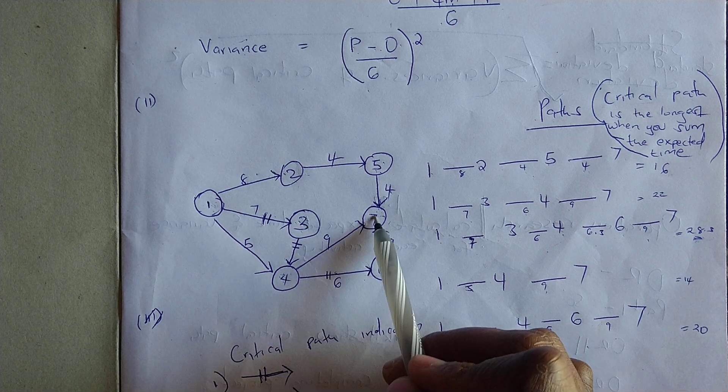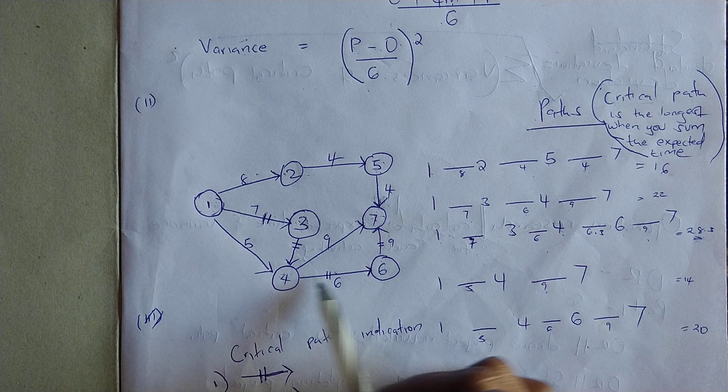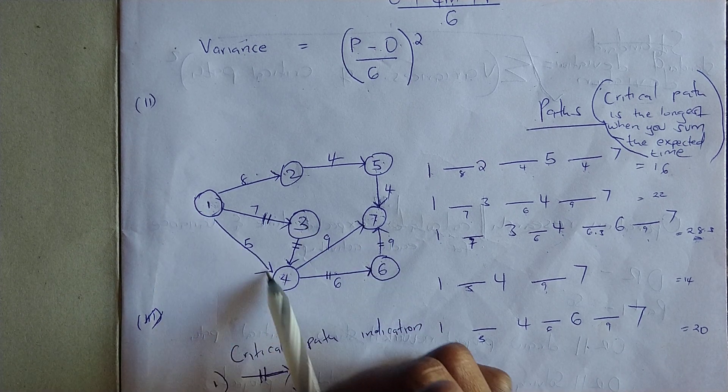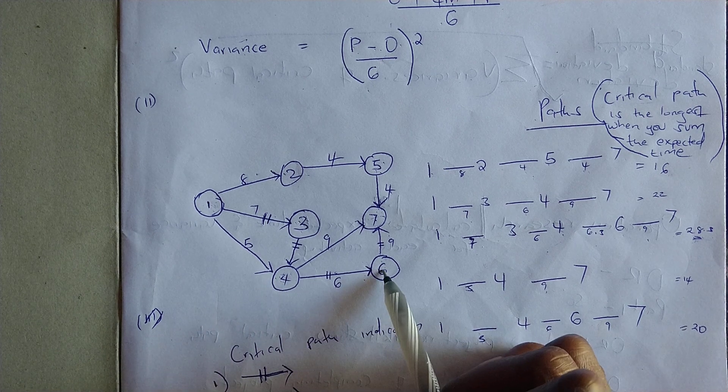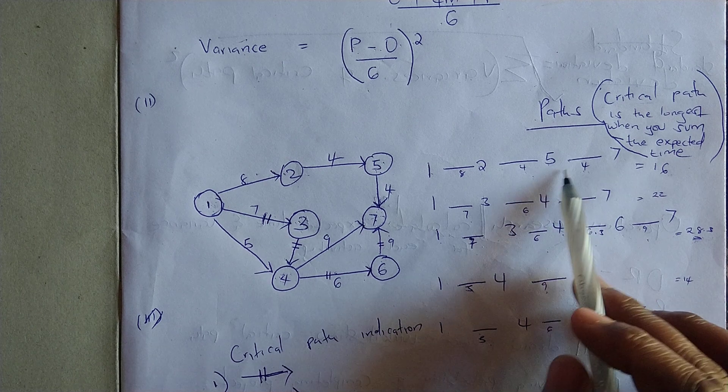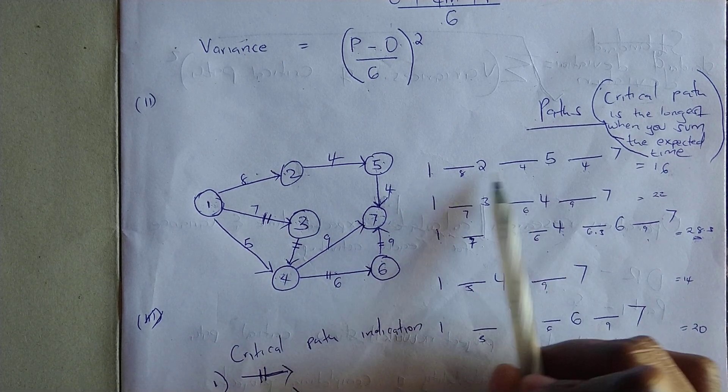Then you have this path: one to three, three to four, four to seven. Then another path: one to three, three to four, four to six, six to seven. Then you have one to four, four to six, six to seven. These are all the activities listed together with their expected times.